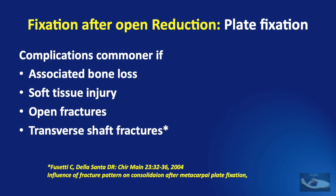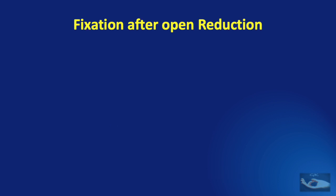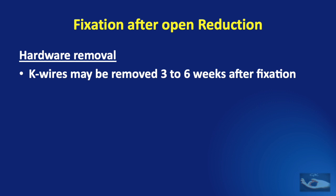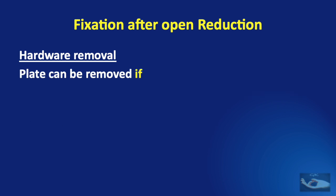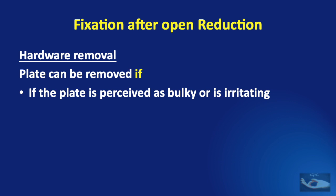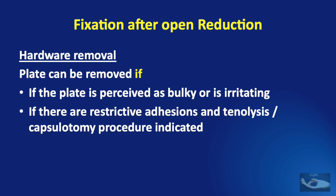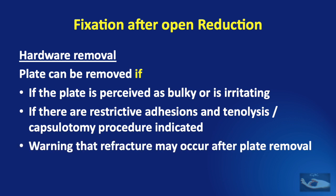The incidence of complications was noted to be higher if there was associated bone loss, soft tissue injury, open fractures, and transverse shaft fractures. Regarding implant removal: K-wires may be removed 3 to 6 weeks after fixation. The AO/ASIF group recommends screw and plate removal approximately 6 months after fixation, but this is not routinely done. The plate can be removed if perceived as bulky or irritating, or if tenolysis or capsulotomy is indicated — with the warning that refracture may occur after plate removal.